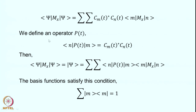We now define an operator P(t), which is time dependent. The matrix element ⟨n|P(t)|m⟩ is given by C_m*(t)·C_n(t). This term, which appears in our double summation, is put into matrix form. As n and m vary over all states, this generates a matrix — for example, varying both indices from 1 to 4 generates a 4×4 matrix.